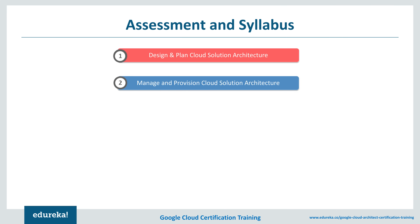Coming on to section two, we have manage and provisioning cloud solution architecture. One should be good at configuring network topologies, which include extending to on-premises or hybrid network, extending to a multi-cloud environment, and some security features. He should know about data protection. Other topics include configuring individual source storage systems, data storage application, data processing and compute processing, and security and access management.